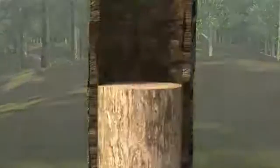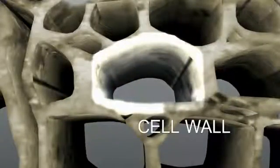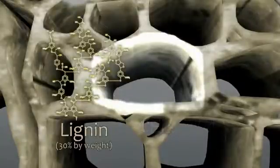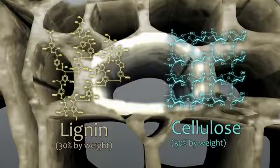This animation illustrates the use of lignin as a precursor to carbon fiber, a sustainable renewable resource. Lignin is derived from woody plants such as trees and switchgrass. Lignin is the glue that binds a tree's cell walls together and comprises up to 30% of a tree's mass.